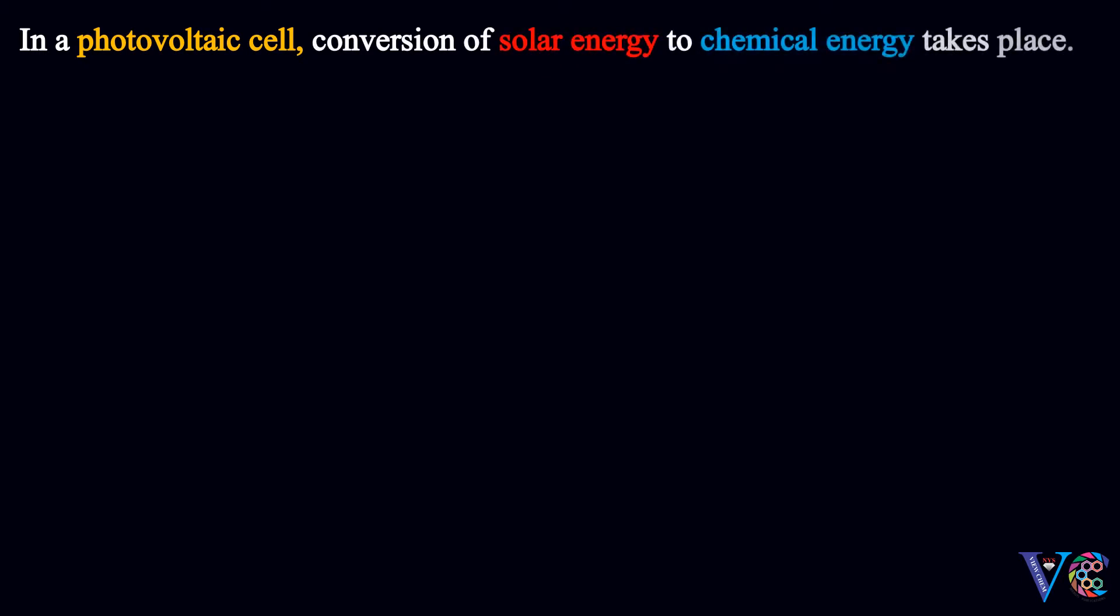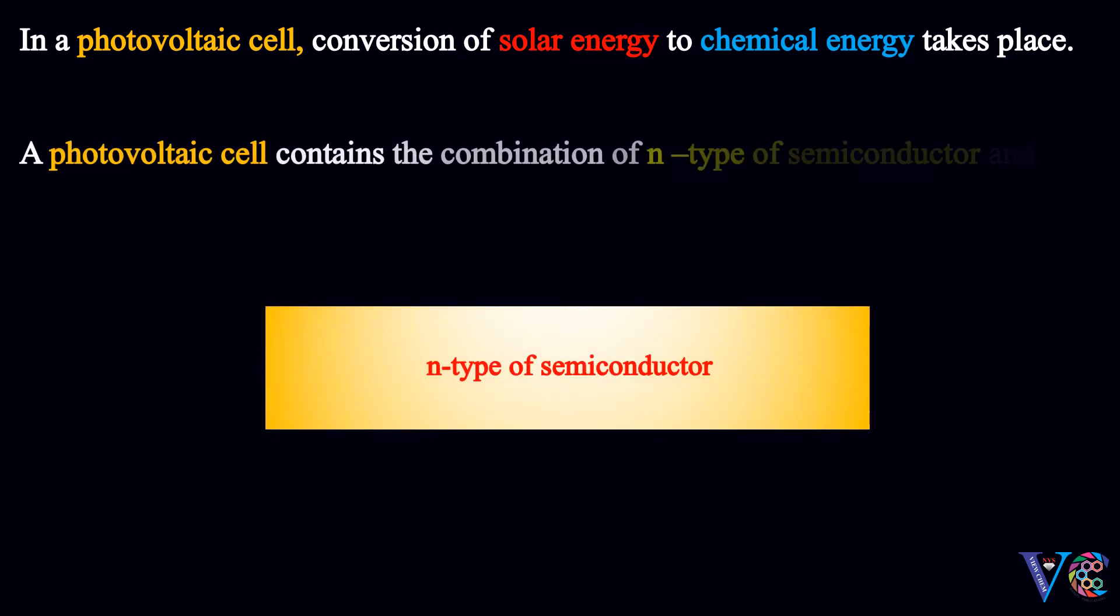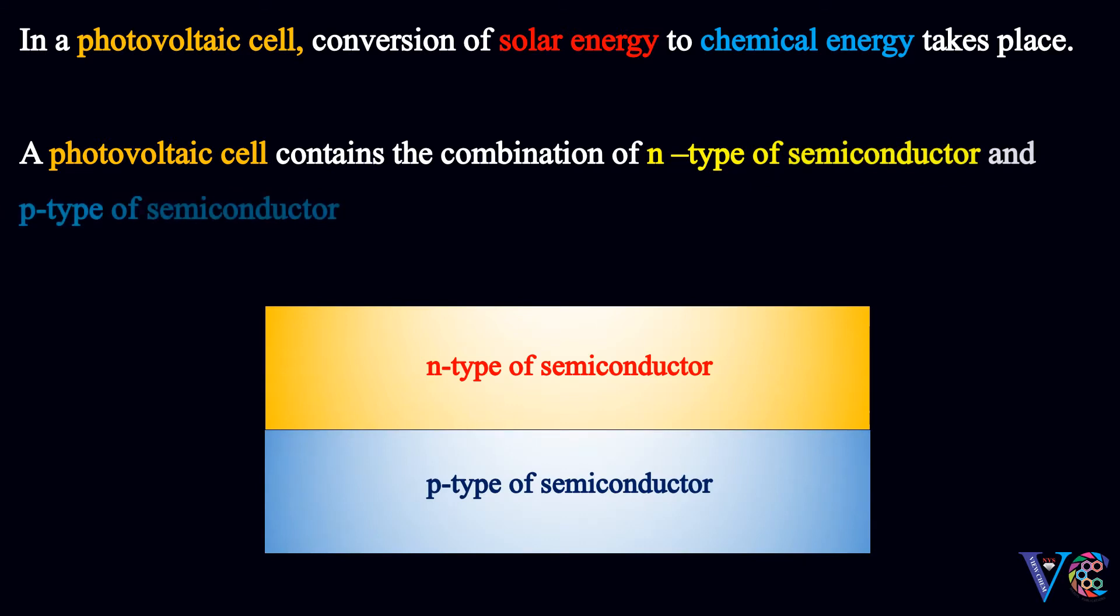In a photovoltaic cell, conversion of solar energy to chemical energy takes place. A photovoltaic cell contains the combination of N type of semiconductor and P type of semiconductor, connected to an electrical device.